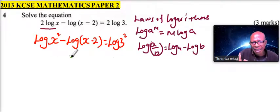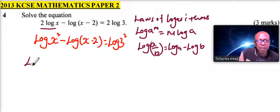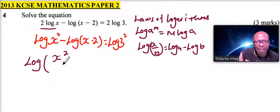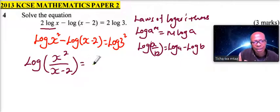We can use that in this, we write it in this format. And therefore we can say this is the same as the logarithm of x squared divided by x minus 2, because the sign here is negative, which is equal to the logarithm of 3 squared.